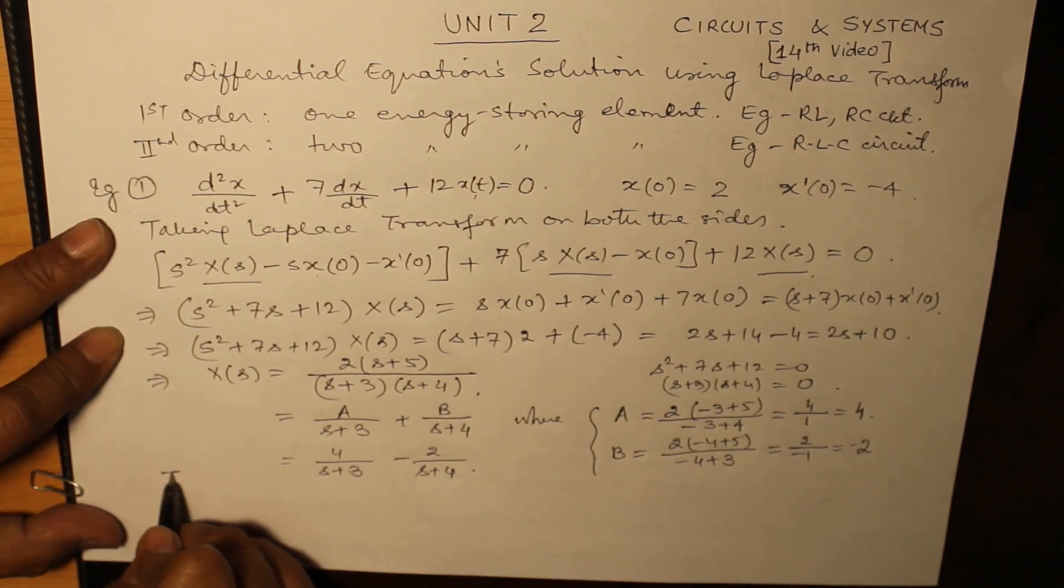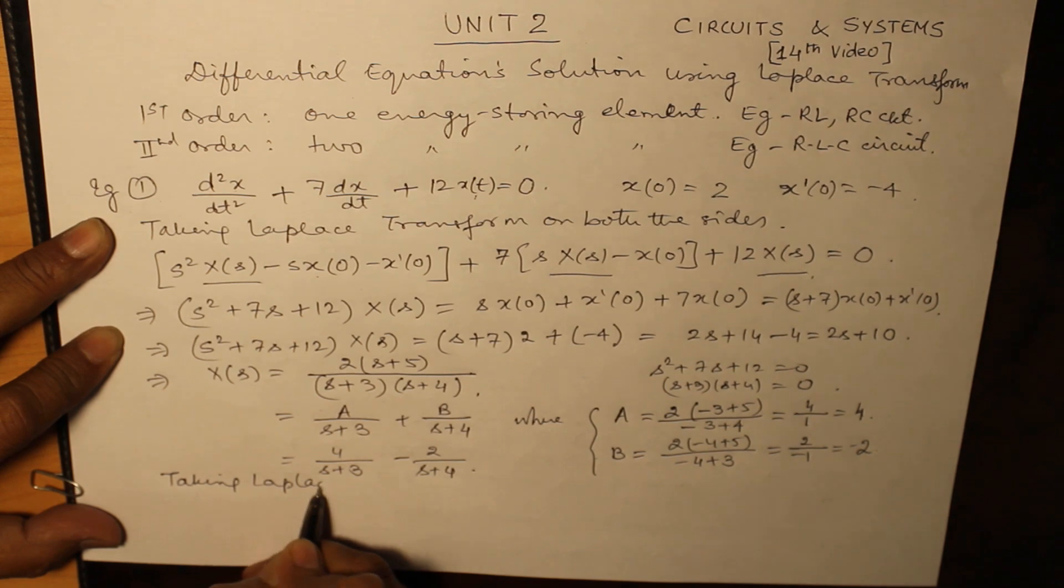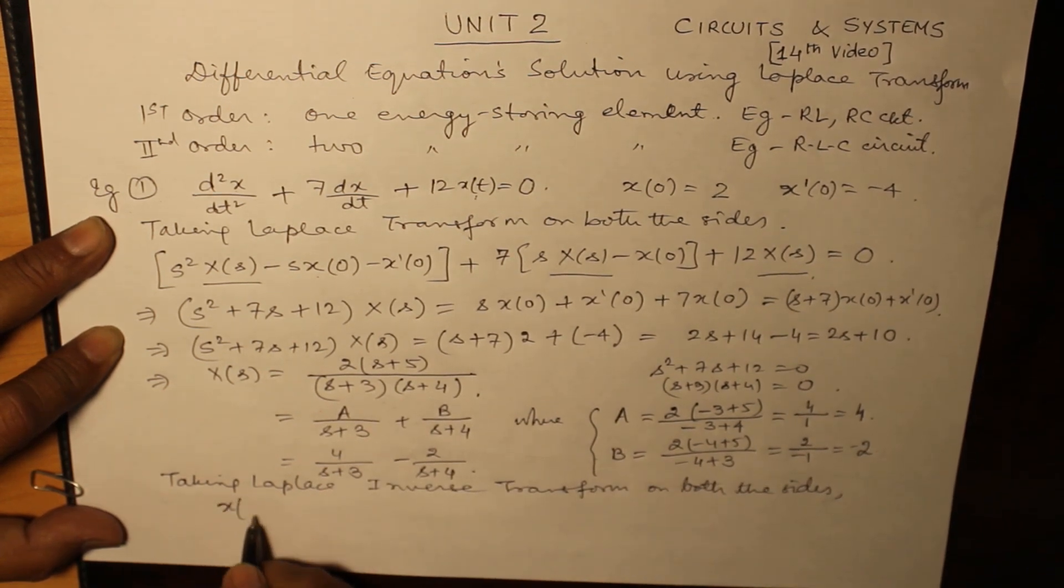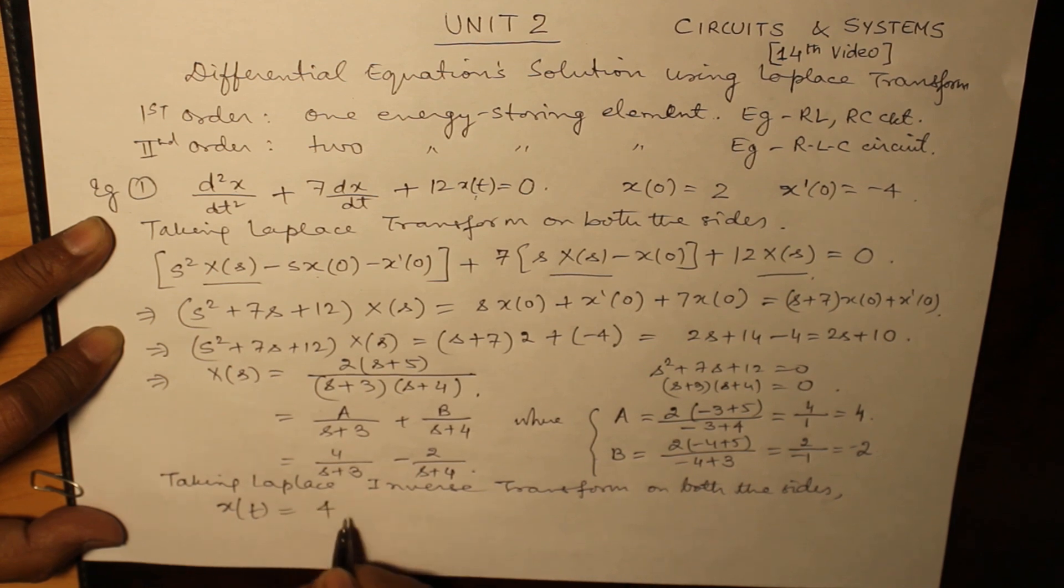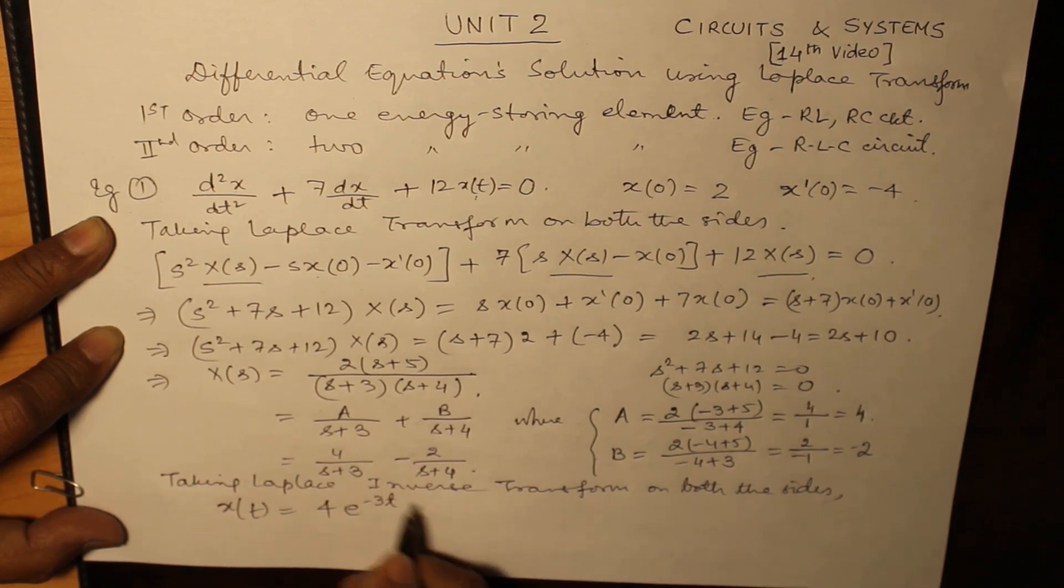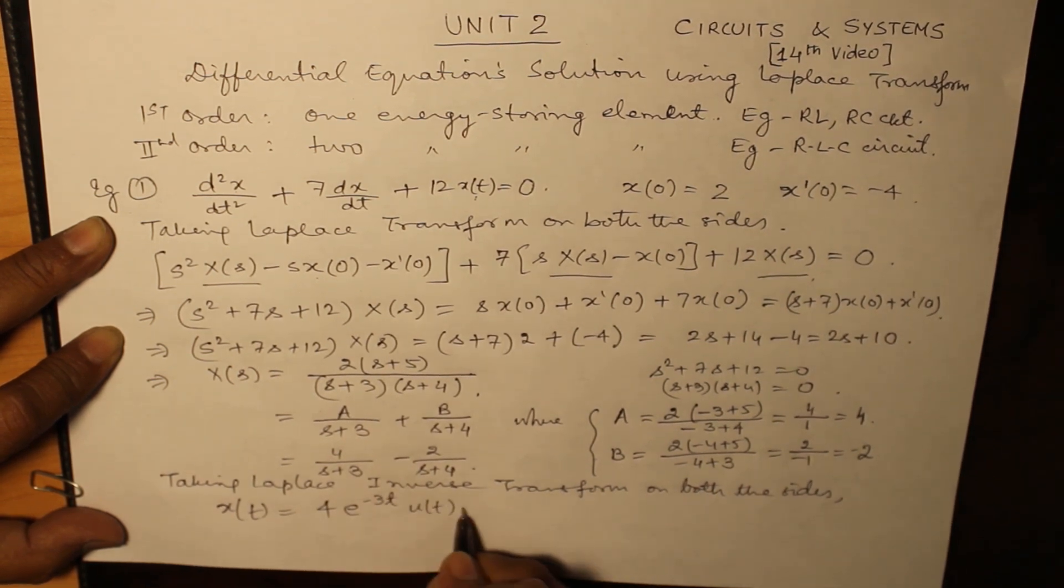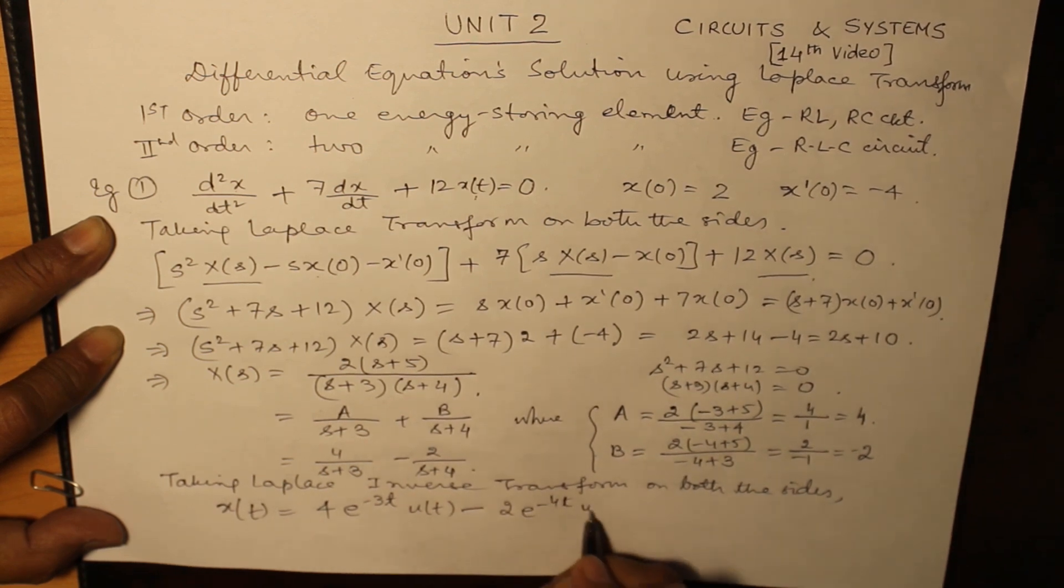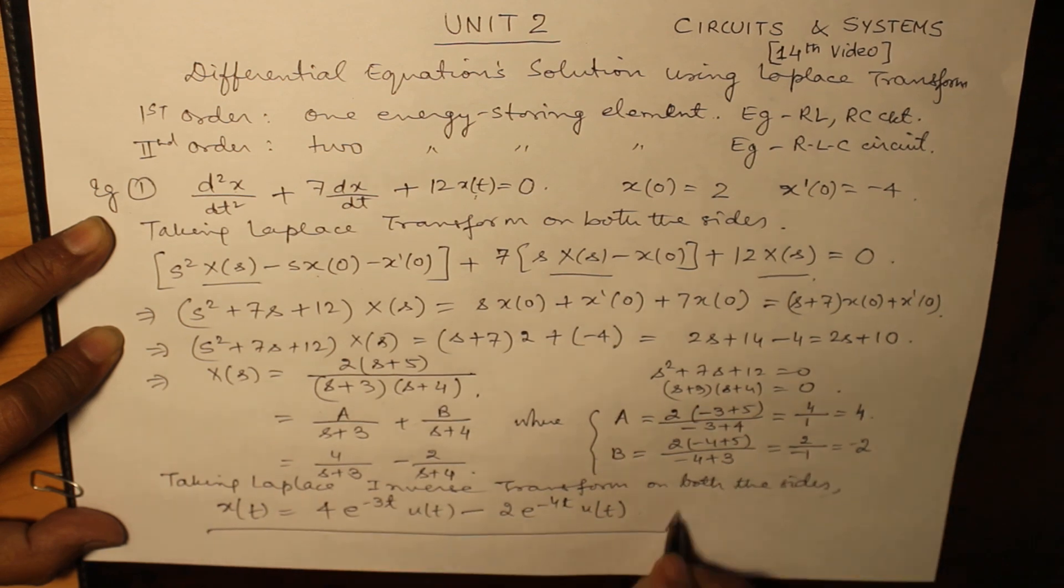Taking Laplace inverse transform of both these sides, we obtain x(t) as being equal to 4e^(-3t)u(t) - 2e^(-4t)u(t). This is your answer.